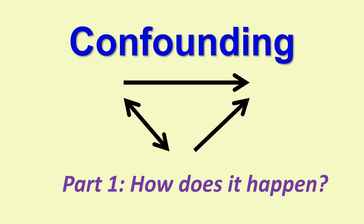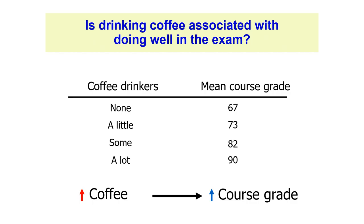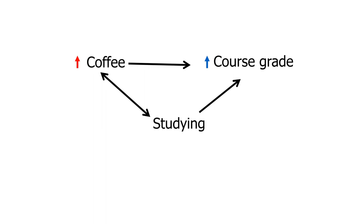Hello everyone, it's Dr. Kazi Rahman here. Welcome to Epi Minutes. Let's start with an example: is drinking coffee associated with doing well in the exam? If you look at the data here, it might seem that if you drink more coffee, you'll get a better grade in your exams. Look at the arrow — there is an association between coffee drinking and course grade.